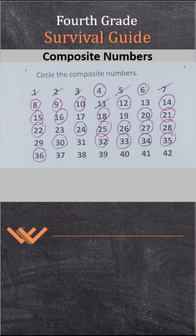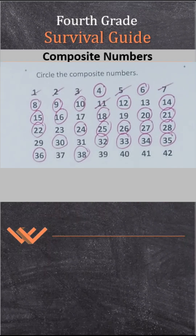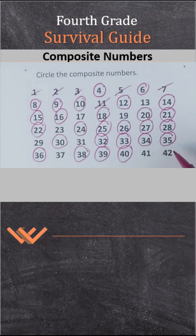37 is prime. 38 — that's going to be 2 times 19. 39 — is that prime? Wait, it's odd — no, no, no: 3 times 13. 40 — 4 times 10. 41 is prime. And 42 is 6 times 7.